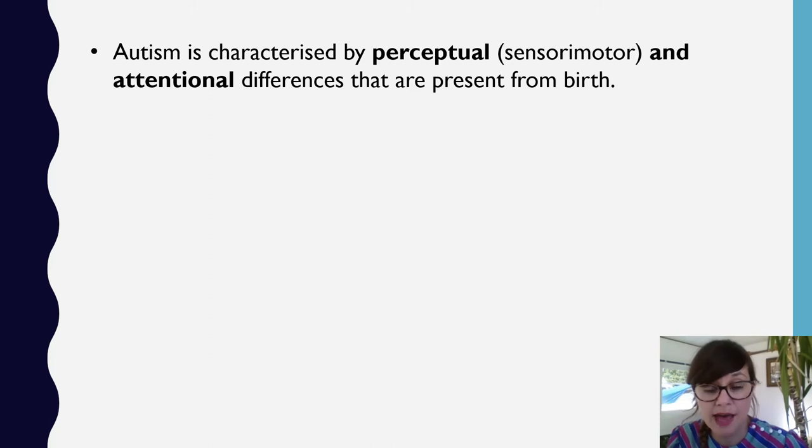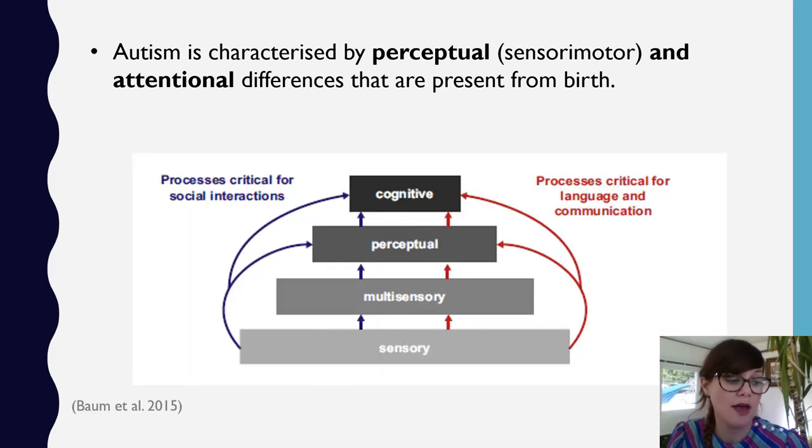Autism is characterized by perceptual and attentional differences that are present from birth. And as we know, sensory information forms the building blocks for higher-order cognitive and social functions. I've taken this diagram from Baum et al. 2015, just indicating how the way in which we process sensory information is a foundational aspect in how we build our perceptual and cognitive abilities.